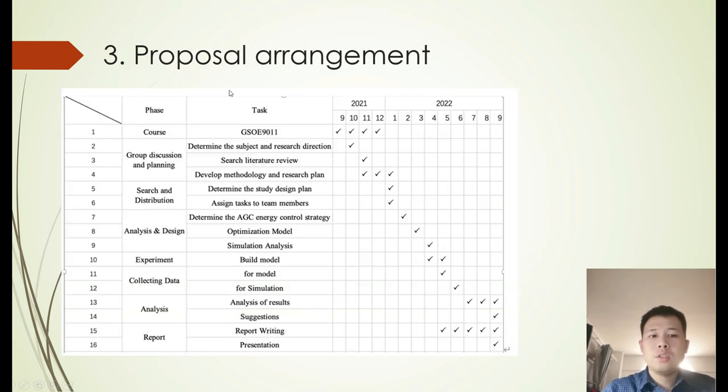Okay, let's get down to the third part, proposal arrangement. You can see that there are several phases of this proposal. The first part is about group discussion and planning. Second, search and distribution. Third, we conduct analysis and design, and we conduct experiments.